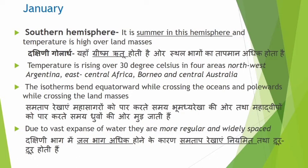Due to the vast expanse of water in the southern hemisphere, the isotherms are more regular and widely spaced. The water moderates temperature, so there is less variation. There are wide spaces between isotherms in the southern hemisphere because there is more water there than in the north.